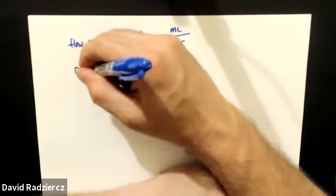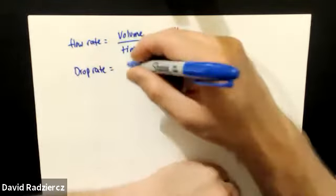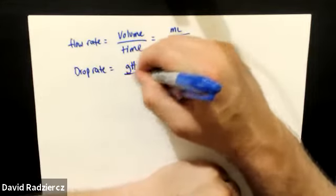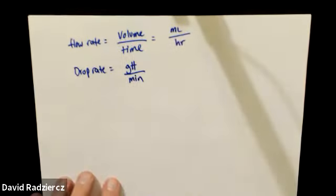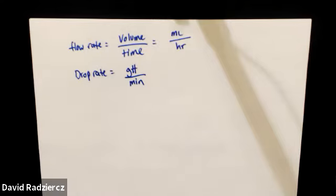The other flow rate you'll get is your drop rate, which tends to be in drops per minute. Those are the two flow rates most likely you would be dealing with. Whenever they say rate, they're talking about volume over time — milliliters per hour.